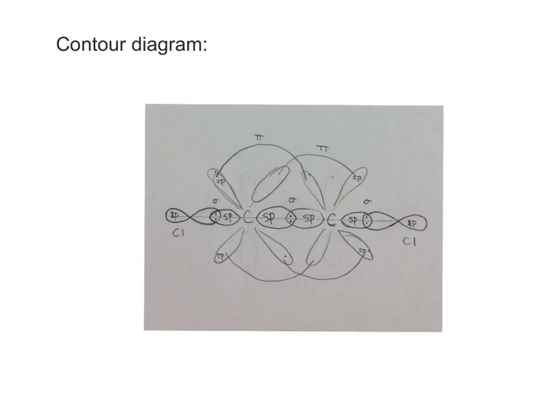Now for the contour diagram, if you remember from the last slides, there are going to be three sigma bonds, two pi bonds that come from the sps, and two pi bonds from the 2p.